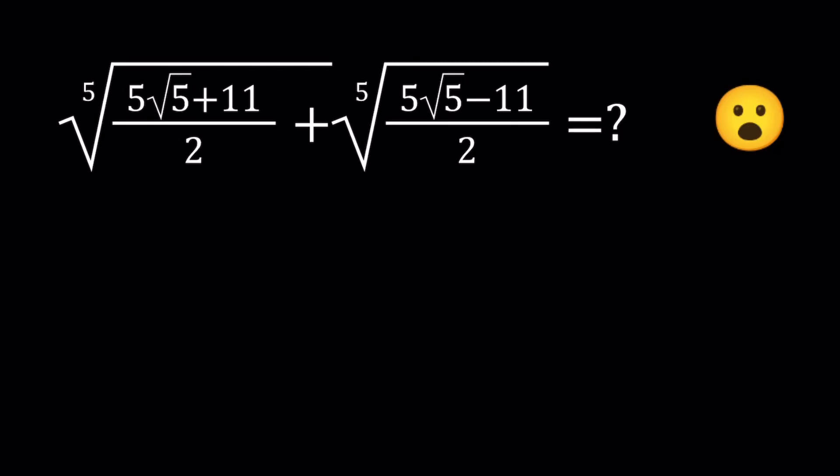Hello everyone. In this video we're going to be simplifying a radical expression - a very radical expression. We have the fifth root of (5√5 + 11)/2 plus the fifth root of (5√5 - 11)/2.